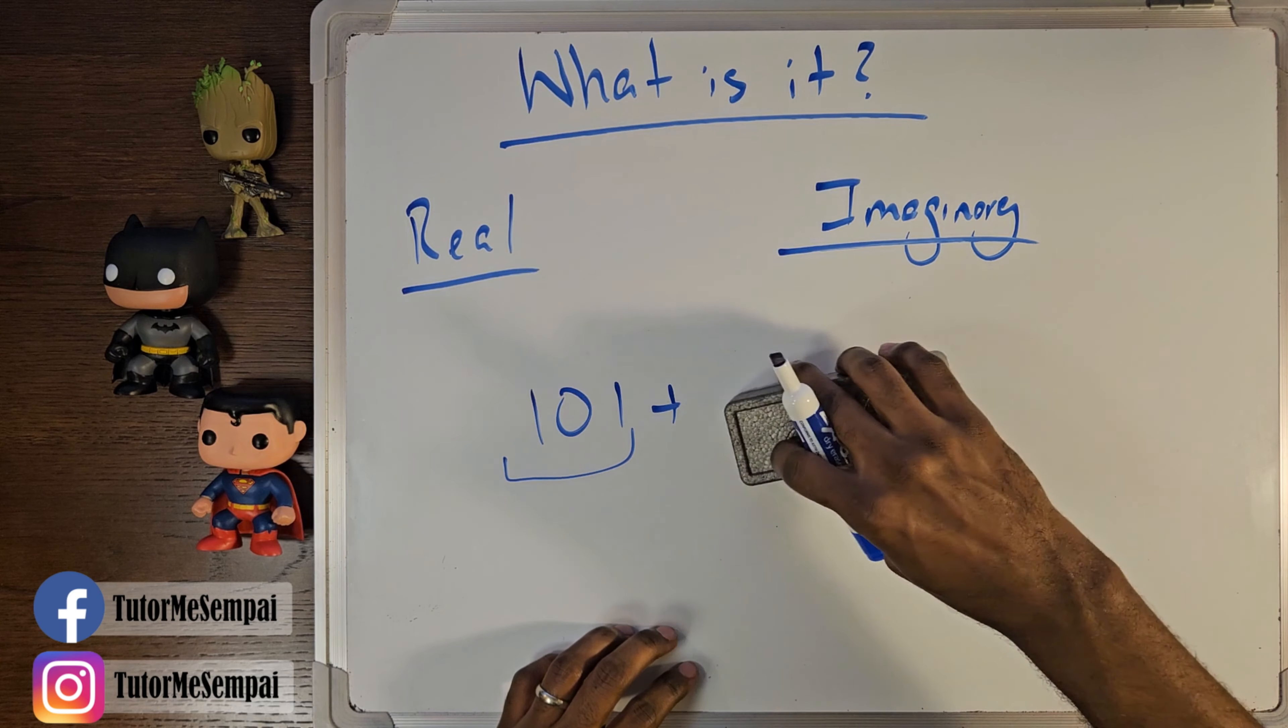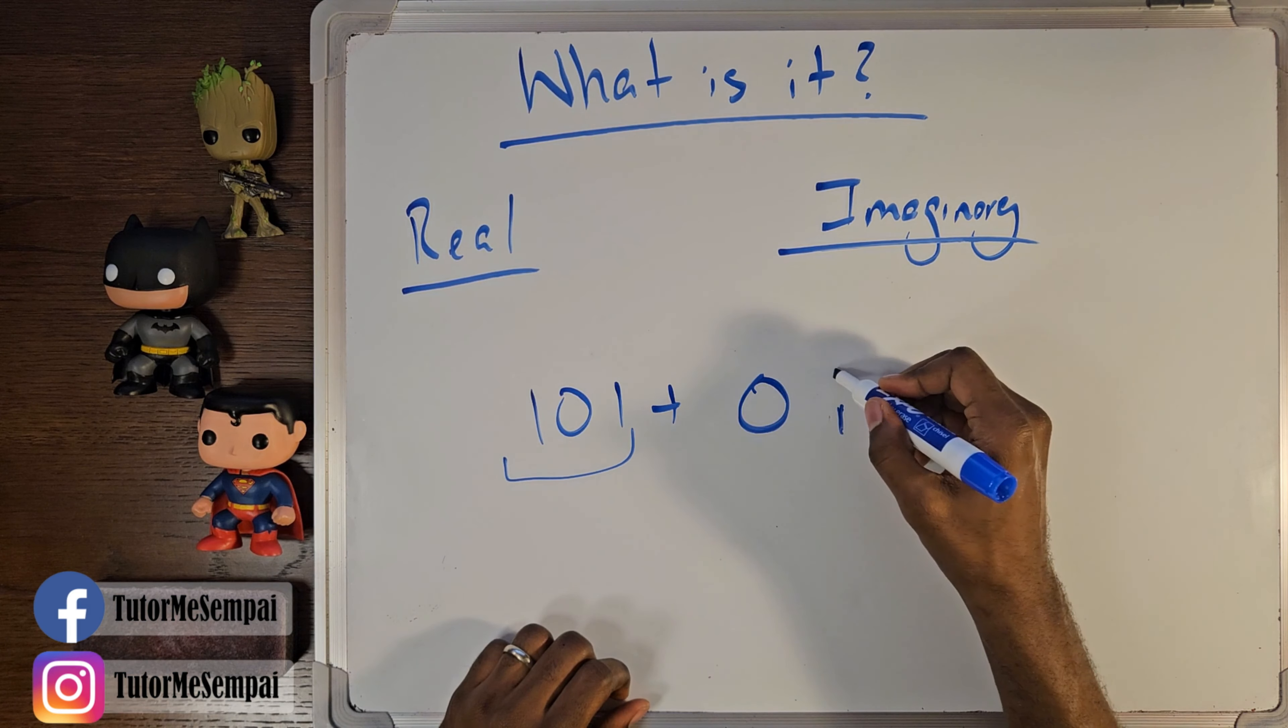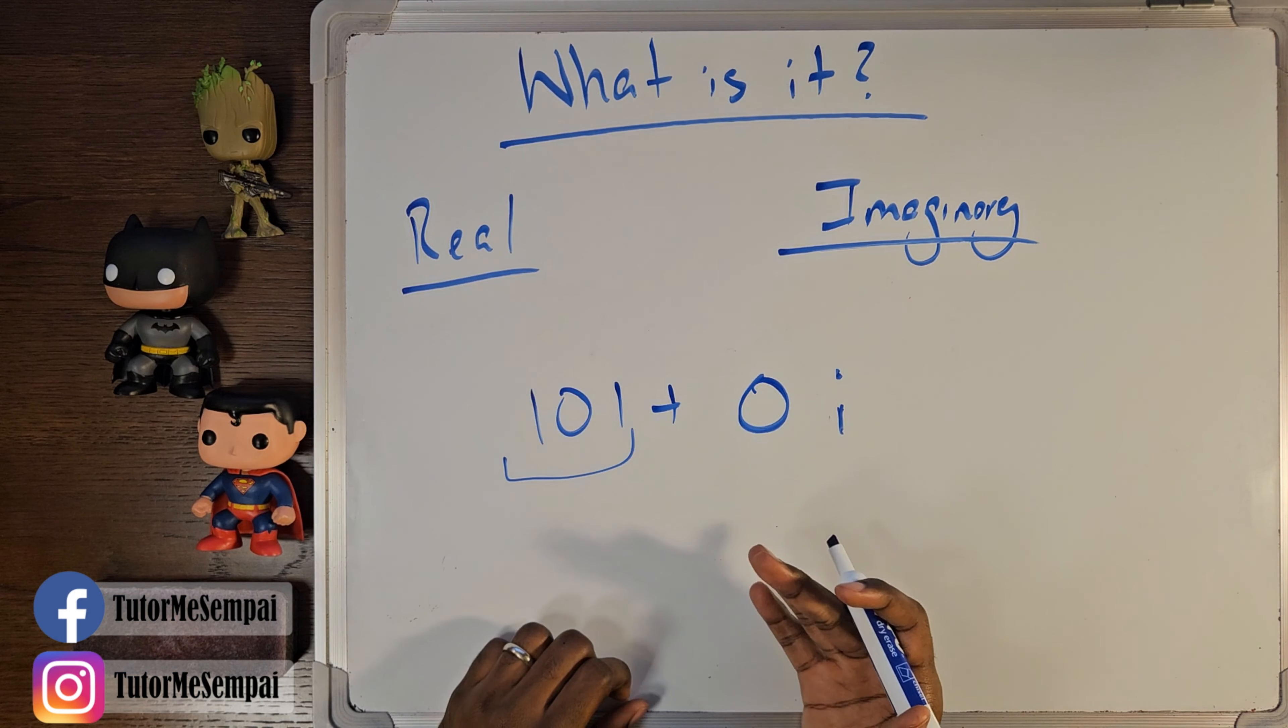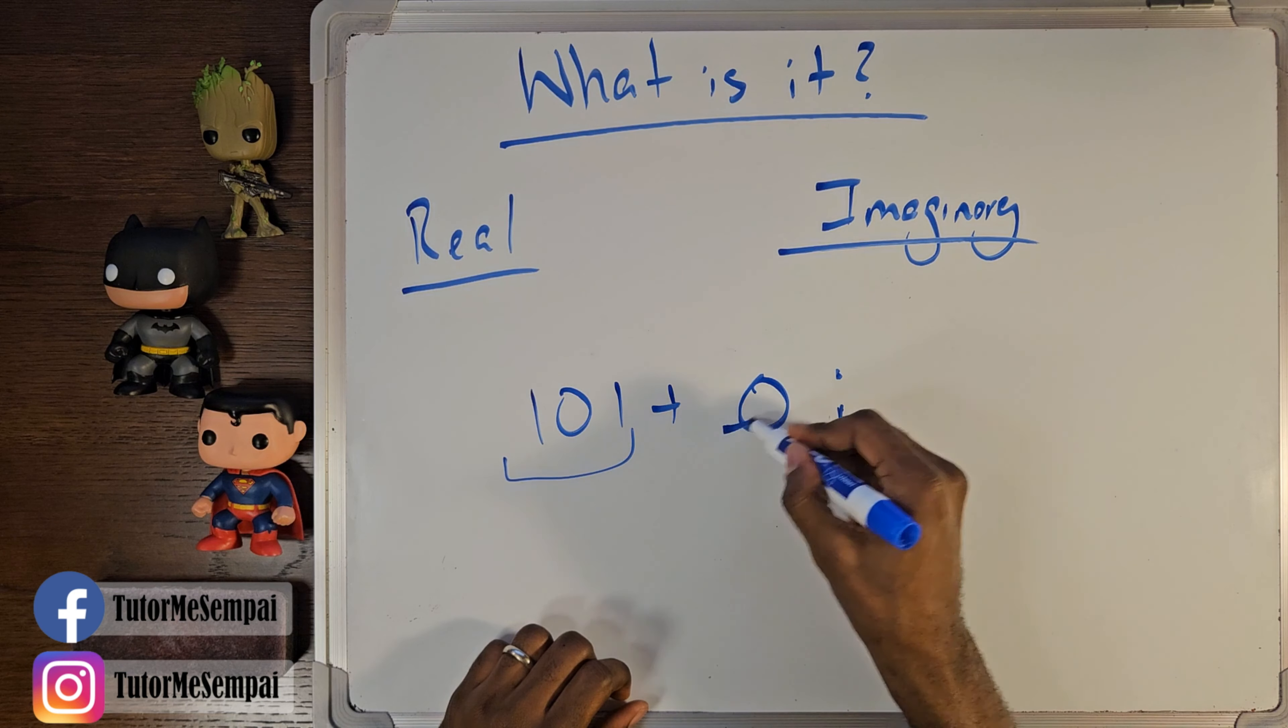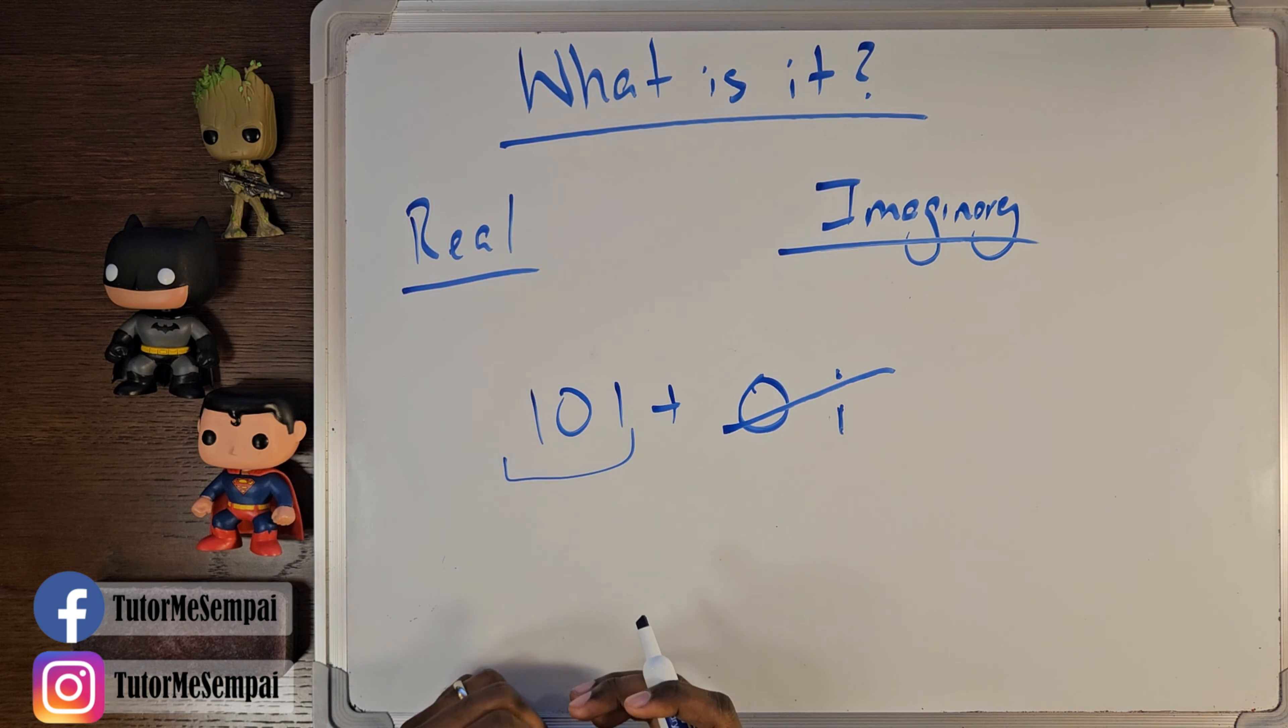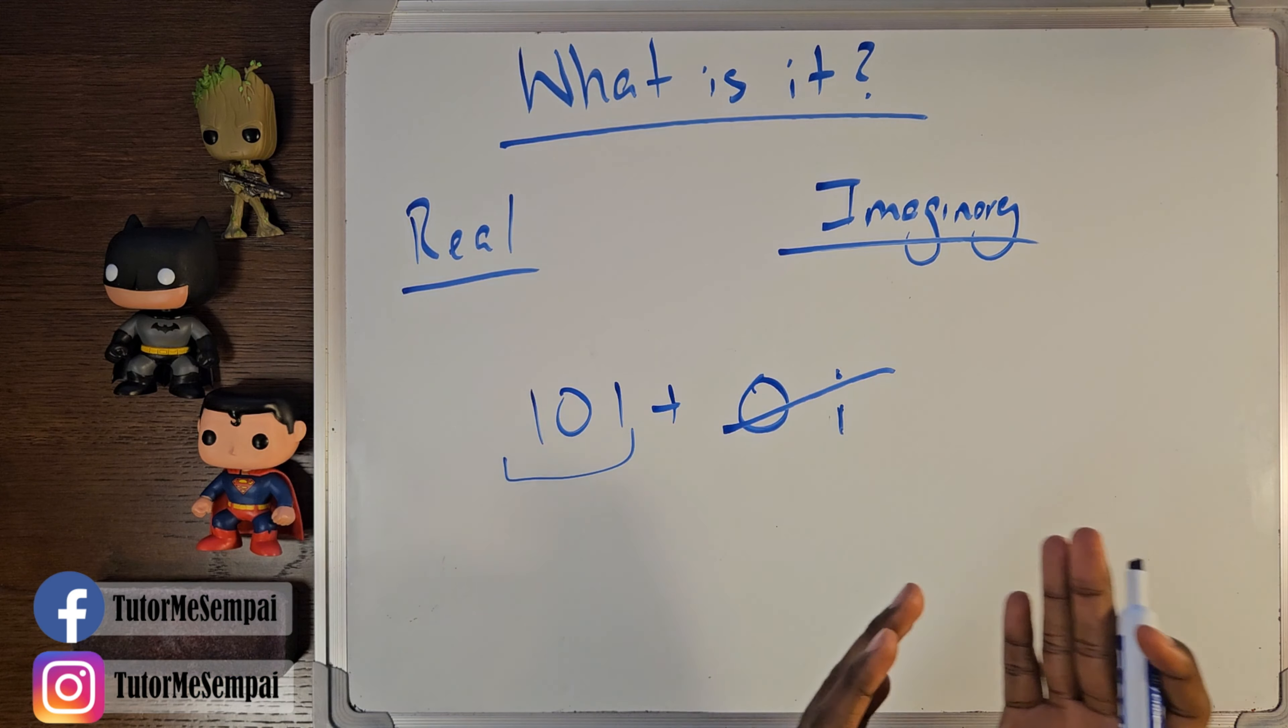But what if I said, instead of that 27 here, you had a 0. So there's a 0 attached to the i. Now, what do you get when you multiply anything times a 0? Well, this will go away. So what's left? You just have your real component. Well, if you just have a real component, that's just going to be a real number. So you can think of all your real numbers as complex numbers, except they all have a 0 for their imaginary component.